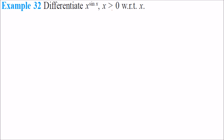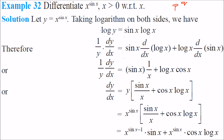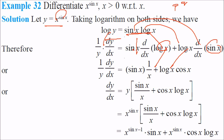Differentiate x to the power sin x, where x > 0, with respect to x. This is a function of the p to the power q form. We take log on both sides: log y = sin x · log x. Then 1/y · dy/dx — now we use the Leibniz (product) rule — equals sin x · (1/x) + log x · cos x. Taking y to the other side, and since y = x^(sin x), the final result is dy/dx = x^(sin x) · (sin x / x + cos x · log x).